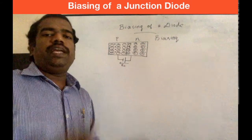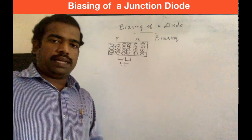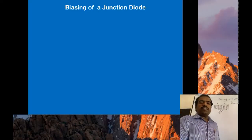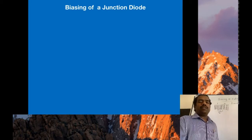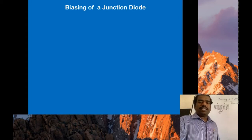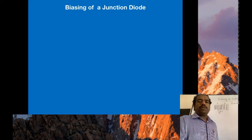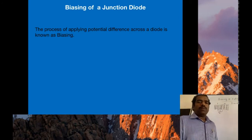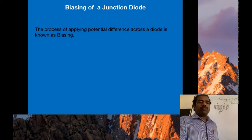Biasing means applying a potential difference across a diode. When we apply an external voltage, an external electric field is applied. Current conduction is possible because of the depletion region and the internal potential barrier. So the process of applying potential difference across a diode is known as biasing. There are two types of biasing: the first one is forward biasing, which is responsible for current conduction through the diode.